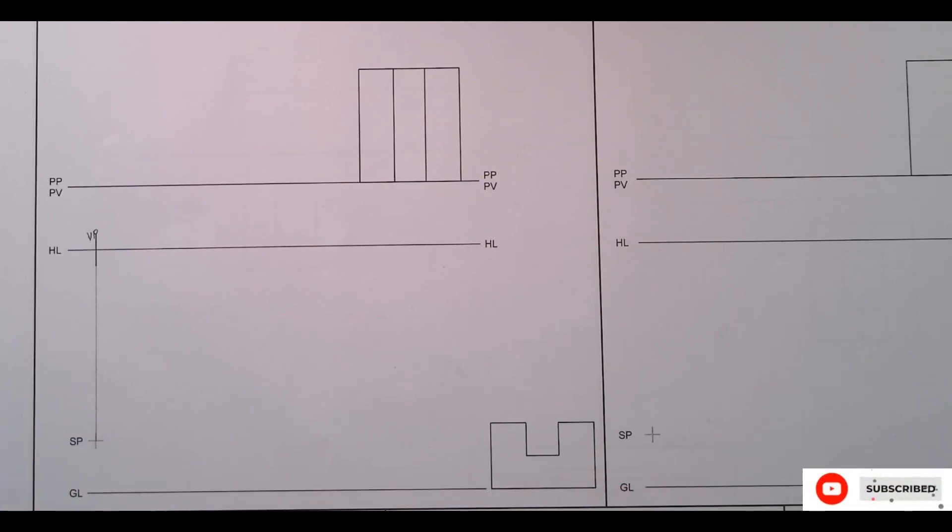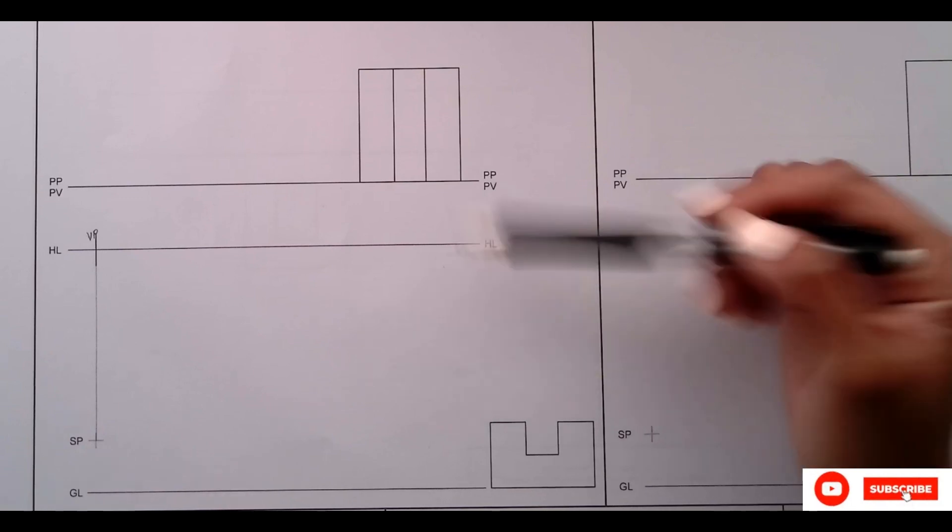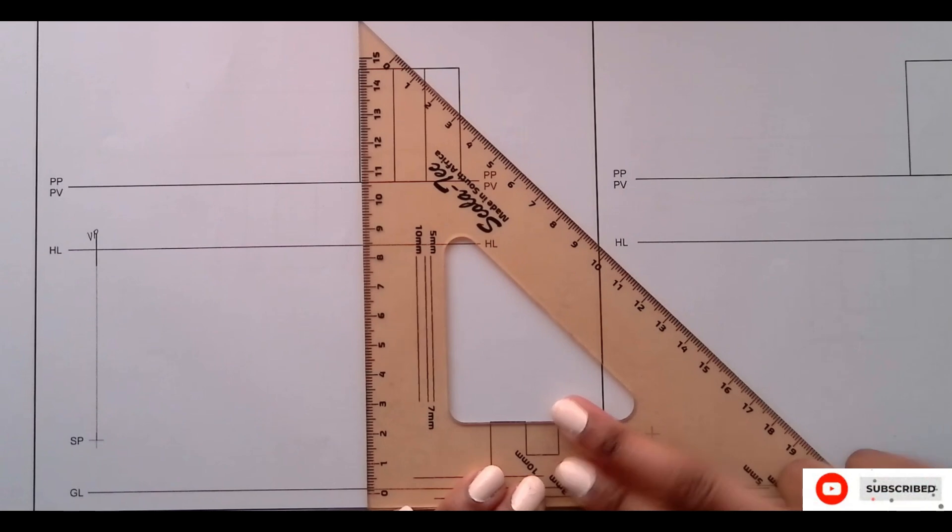Then from there, we're going to now start with our drawing. We have our plan label, we're going to bring down the points from the top view, straight down.